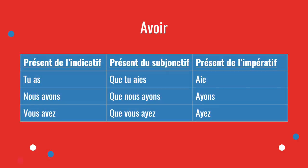Avoir works the same way. In le présent de l'indicatif: tu as, nous avons, vous avez. In le subjonctif: que tu aies, que nous ayons, que vous ayez. In l'impératif, remove the que and the S on the second person singular: aie, ayons, ayez. It's a bit tricky, but être and avoir are very useful in l'impératif.